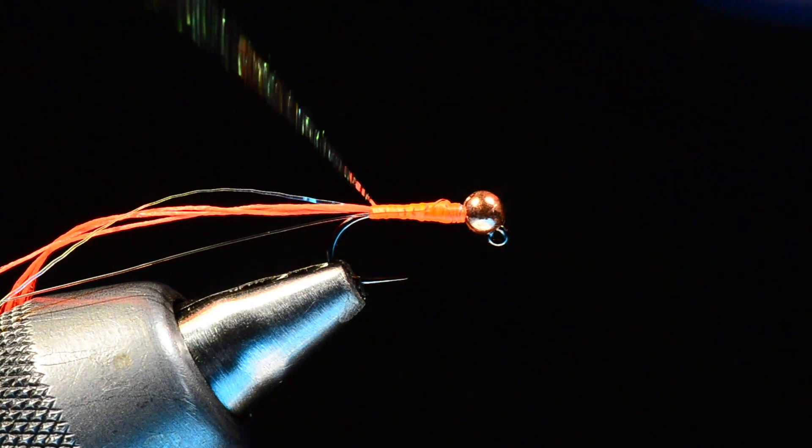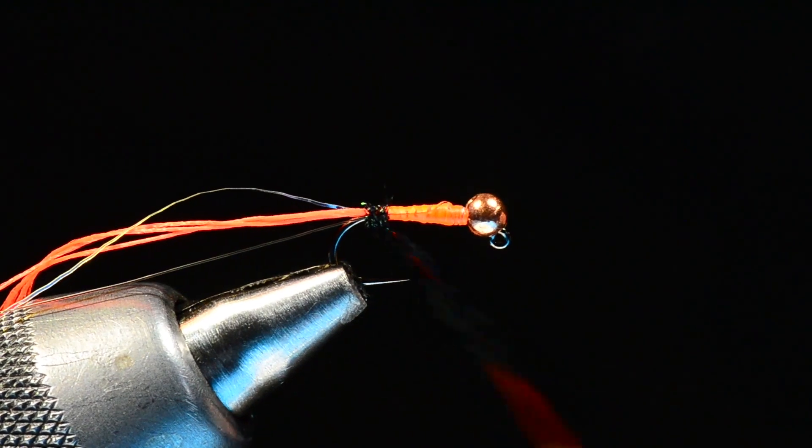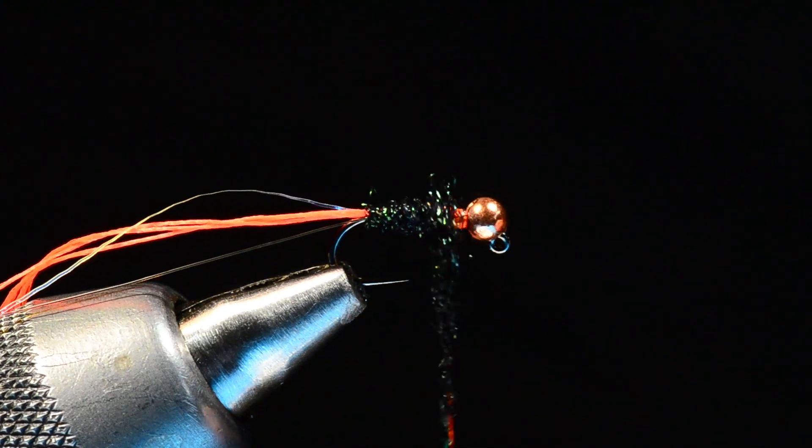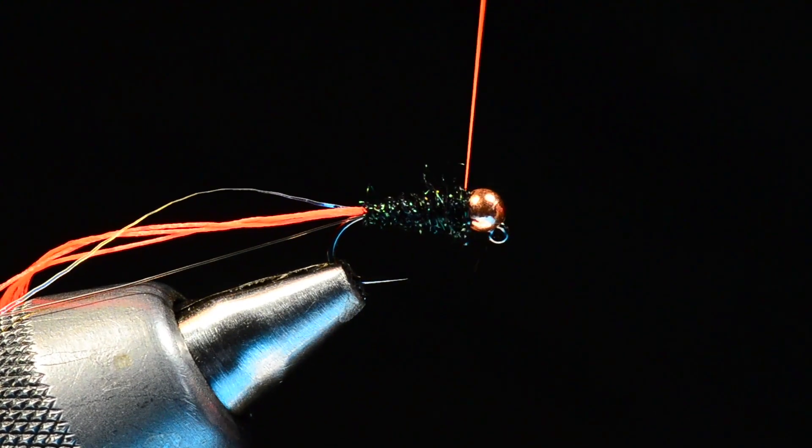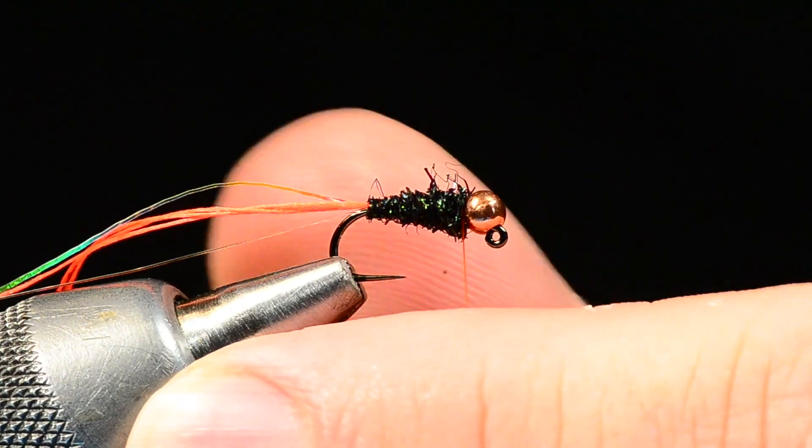I'm going to work with that bare thread coming back to the bend so that my first turn comes around at the bend. As I come forward, I'm going to build just a slightly tapered body right up to the back of the bead. If you've got a few crazy ones sticking out there you can trim them off, but it's really of little consequence.